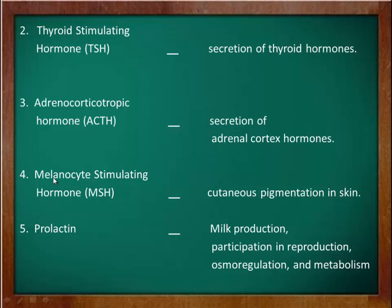The fourth hormone is melanocyte stimulating hormone, or MSH. It targets the melanocytes present in the skin and stimulates cutaneous pigmentation by dispersion of melanin granules in the skin.